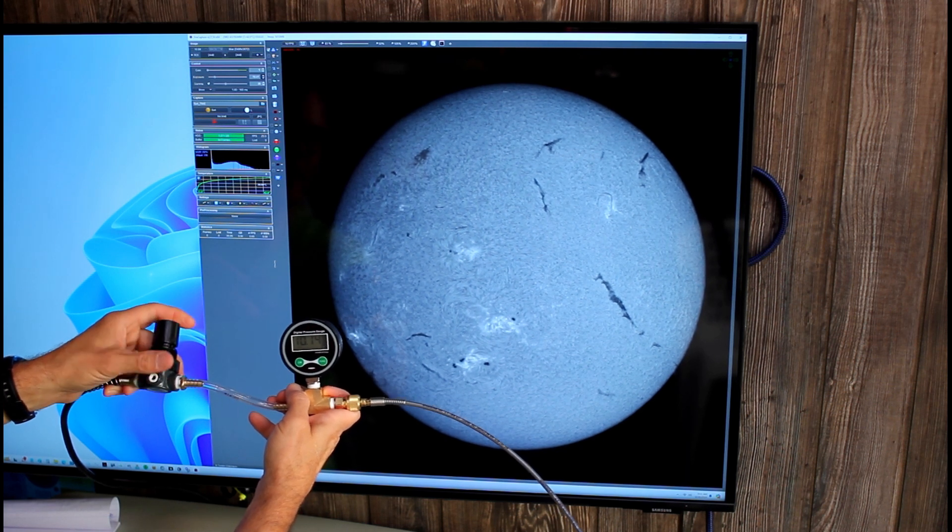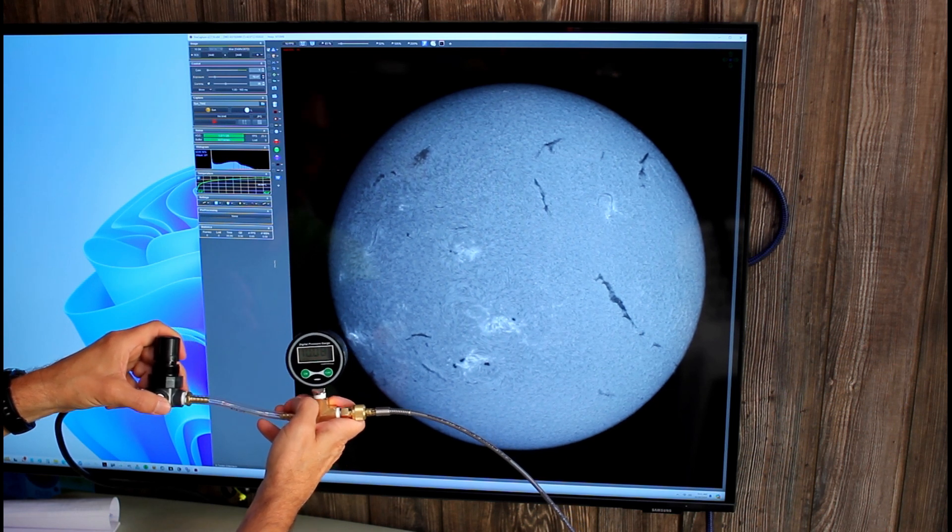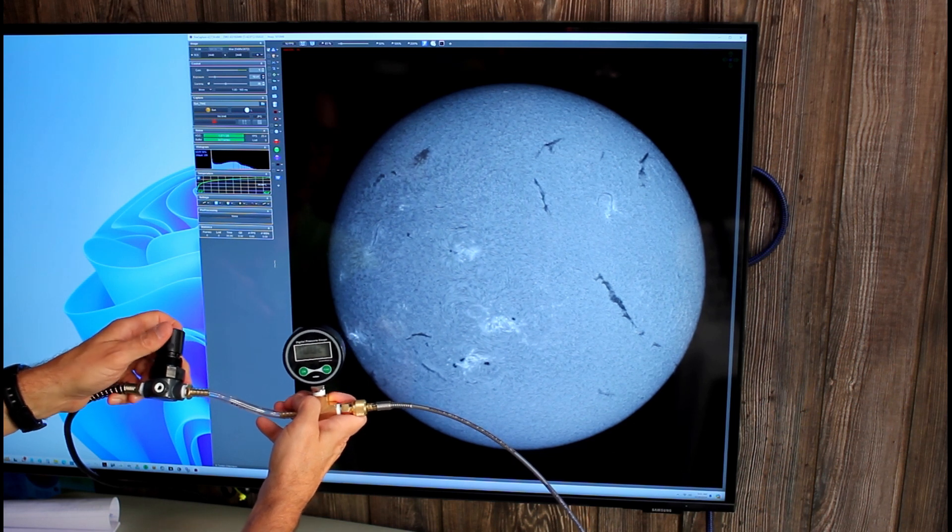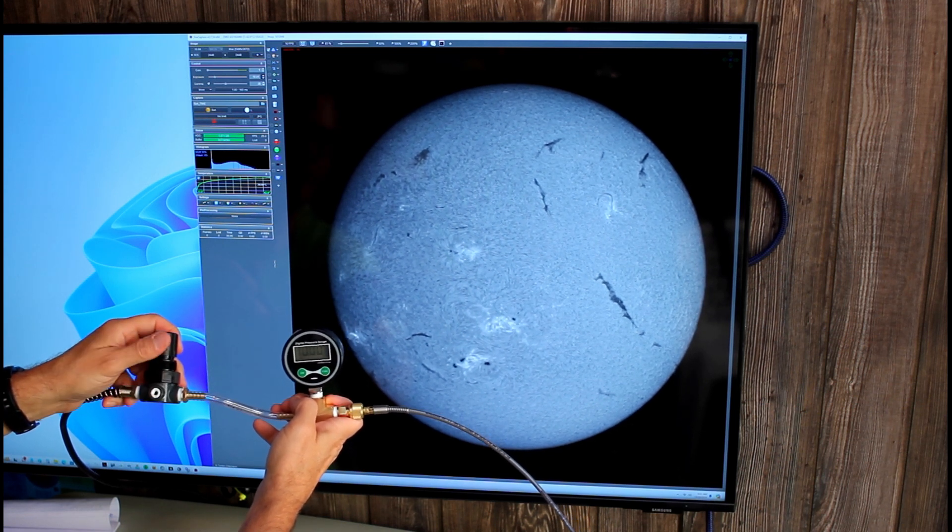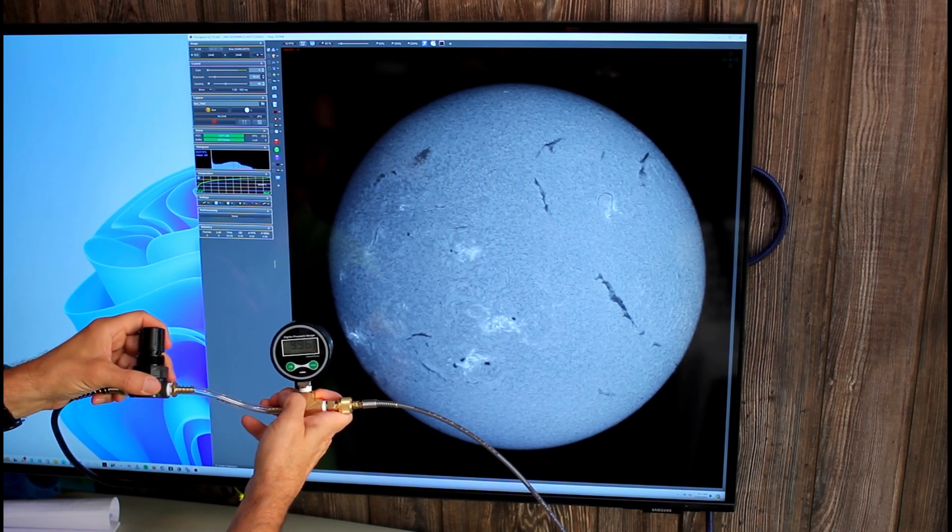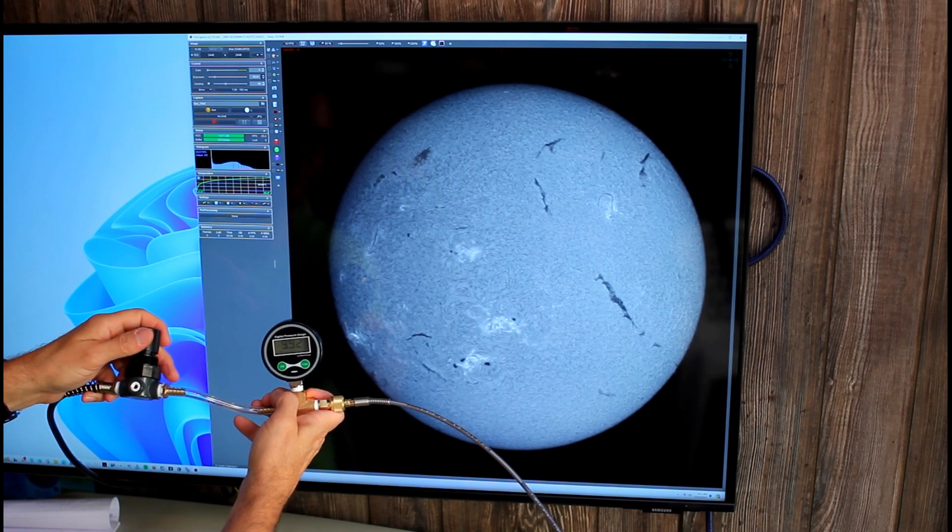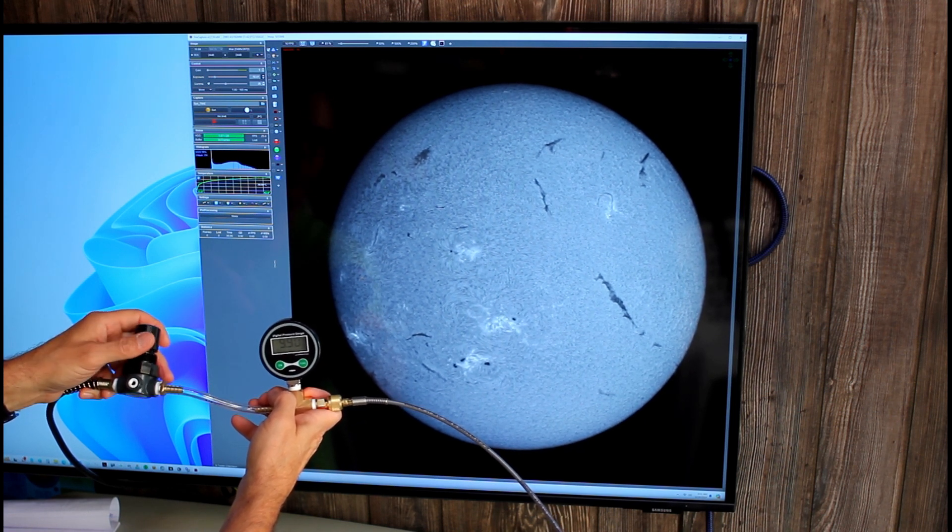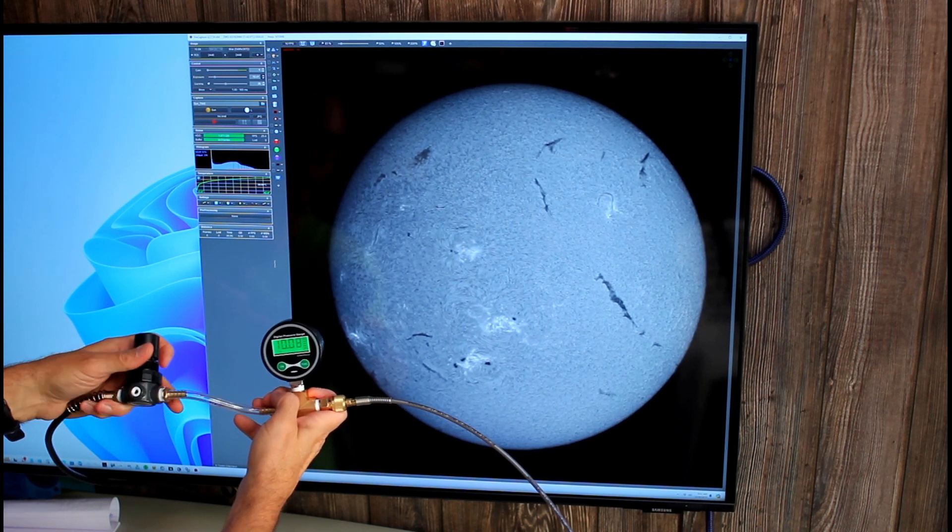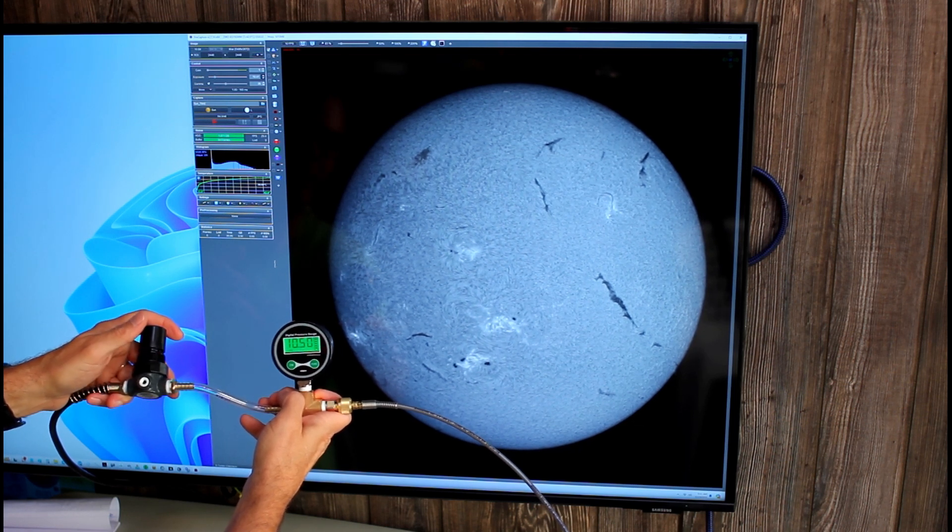So this is ideal for long duration solar imaging such as taking time lapses over a period of hours where you don't want to have to be present to manually adjust the pressure periodically. But the pressure will drop by about half a psi before it's regulated back up to your set point. So now I'm back up over 10 psi again.